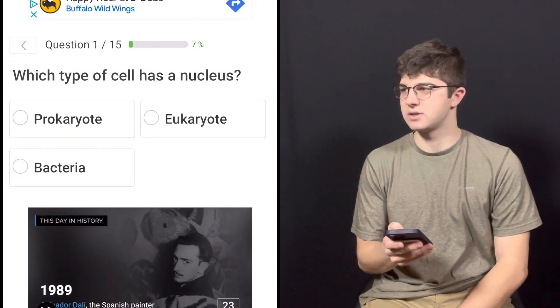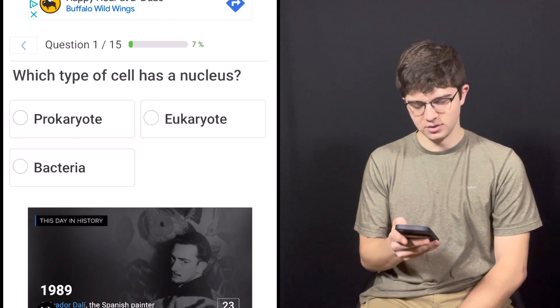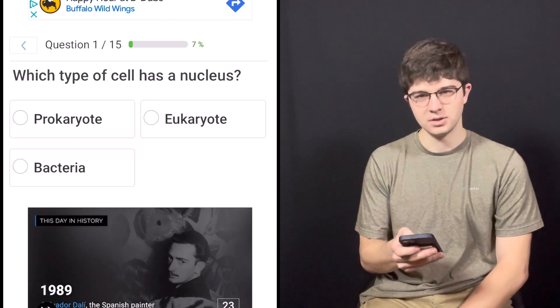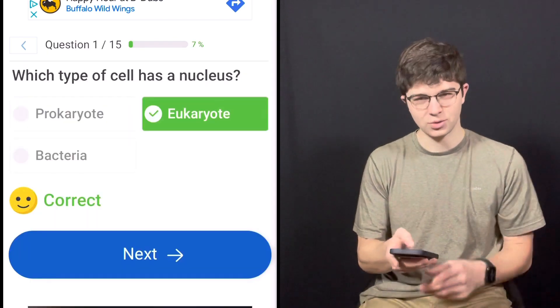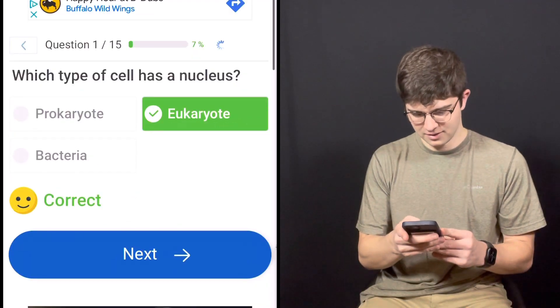The first question is pretty easy. What type of cell has a nucleus? Is it a prokaryote, a eukaryote, or a bacteria? It's a eukaryote. That's correct.